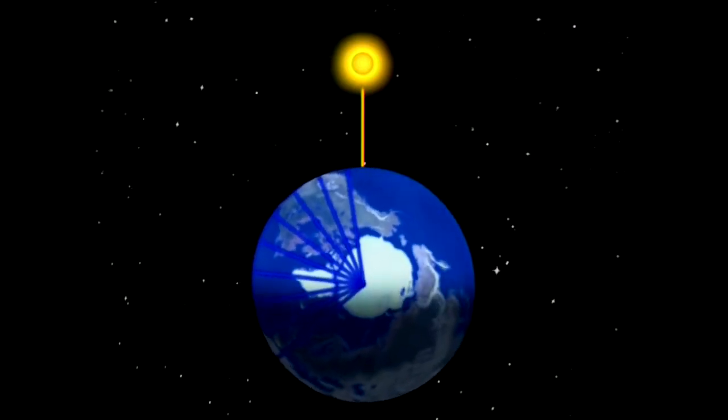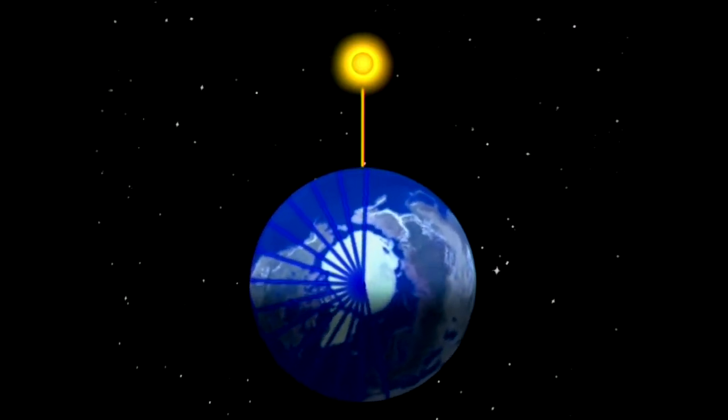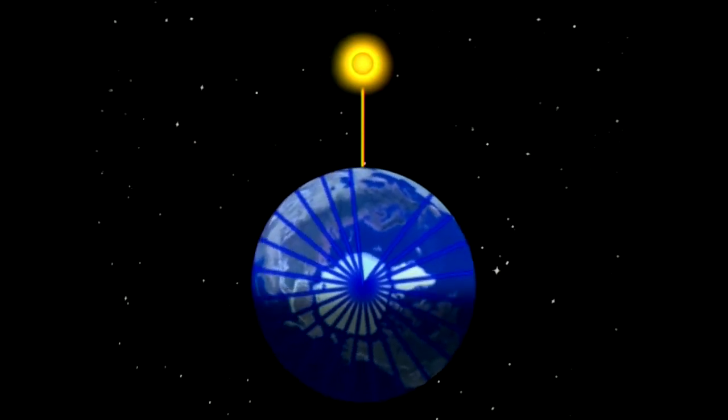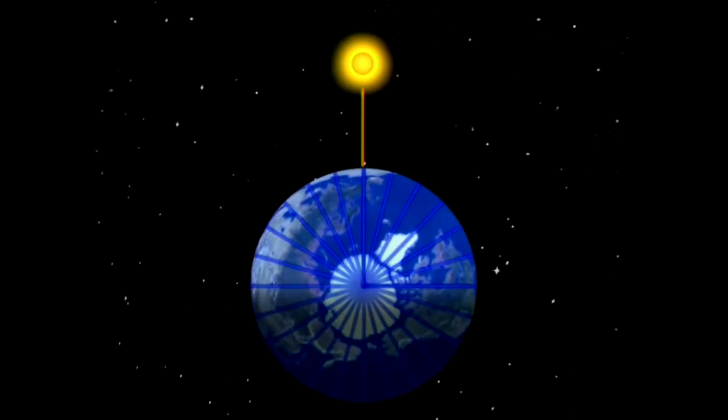The Earth turns. Every hour it points a new segment, a new meridian, at the Sun. On the meridian facing the Sun, it's noon. Paris, New York is a quarter of the Earth.